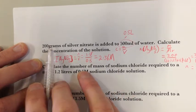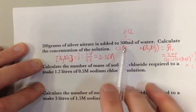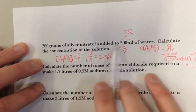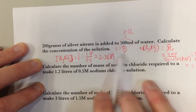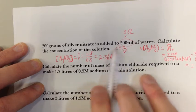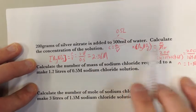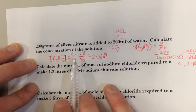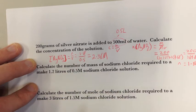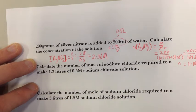So the concentration of silver nitrate in this solution, where I've dissolved 200 grams in 500 mls of water, is 2.36 molar. I always write down my equation, work out my number of moles if I need to, and then plug in my actual values. Let's have a look at the next one.